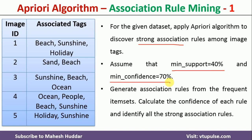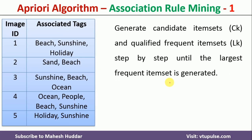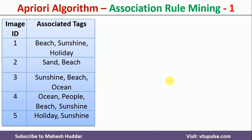To generate strong association rules, first we need to generate the itemsets and then find the qualified frequent itemsets based on the minimum support. Once we get the largest frequent itemset, we can start building the association rules. I will explain how to get the frequent itemsets step by step.